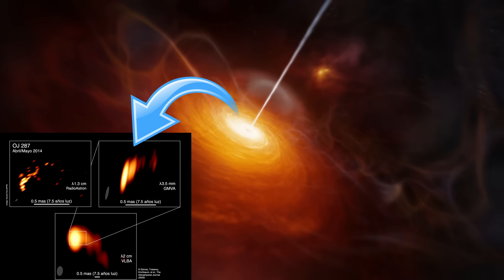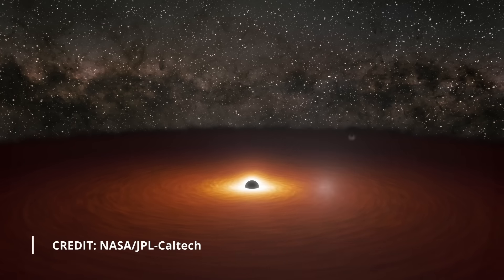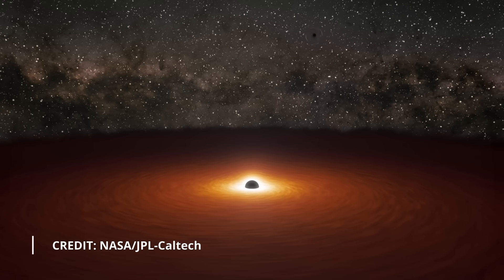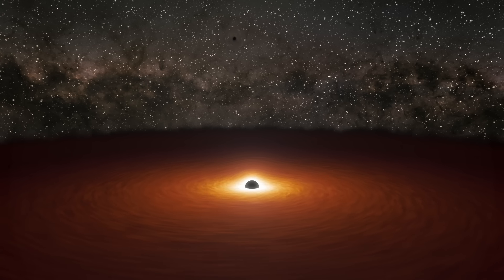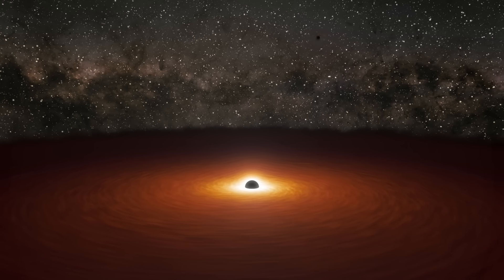A blazar in a distant galaxy exhibiting periodic flaring is believed to indicate the presence of a binary pair of black holes. Recent observations appear to support this interpretation but also raise questions as some aspects deviate from their model predictions.